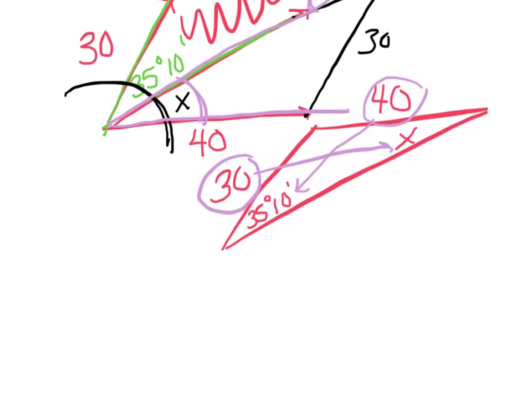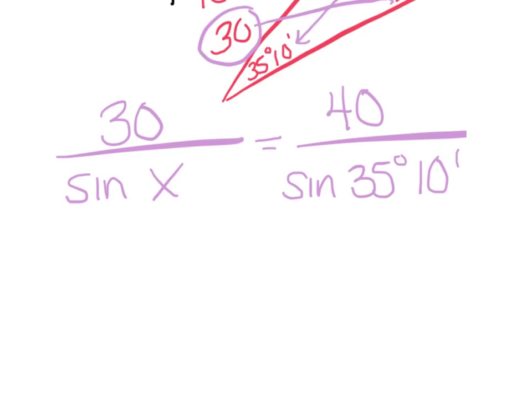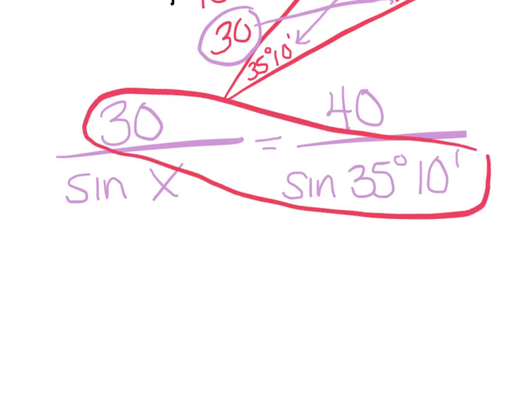So I'm going to say 30 is across from the sine of x. Remember the angle goes with the trig function. 40 is across from the sine of 35 degrees in 10 minutes. Make sure the angle is with the trig function. A nice cross multiply. Always put that nice single number in front. 30 sine of 35 degrees in 10 minutes equals 40. Put that nice number in front. Sine of x.